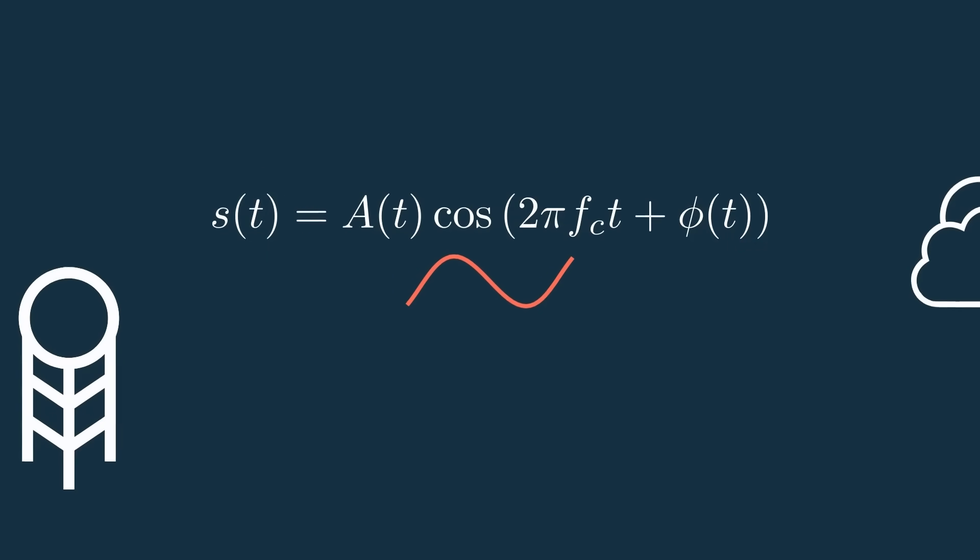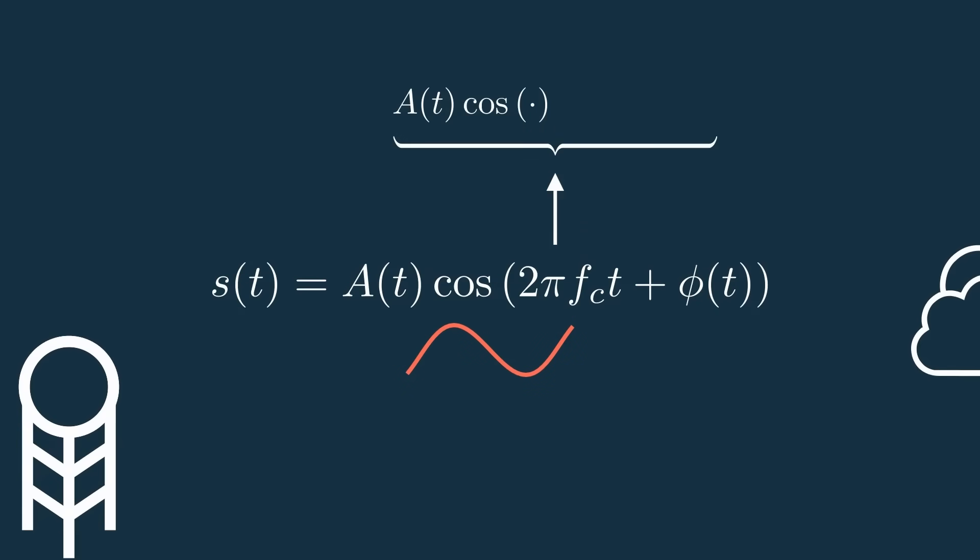First, we get this received signal from the cloud in terms of cosine, which it already is, and sine. Then we need to somehow pull out this phase term, which currently is combined with the angular frequency term to get a single value like pi over 3 in the last example.